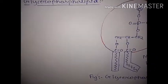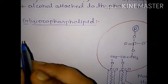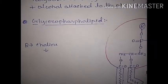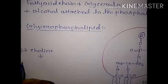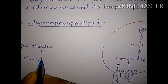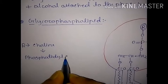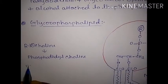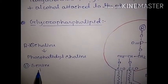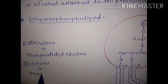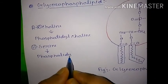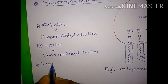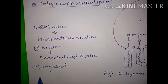Generally we find three or four types of R groups attached to the phosphate. When choline is attached with the phosphate, it forms phosphatidylcholine. When serine is attached with the phosphate, it is called phosphatidylserine. When inositol is attached with the phosphate, it is called phosphatidylinositol.